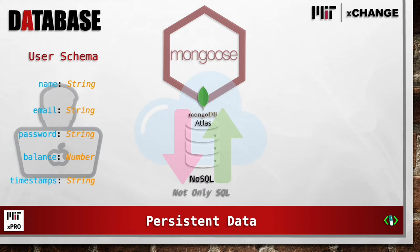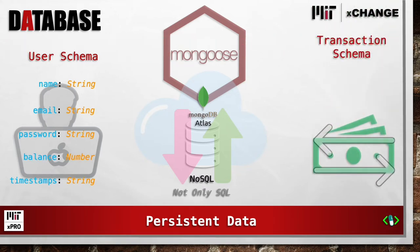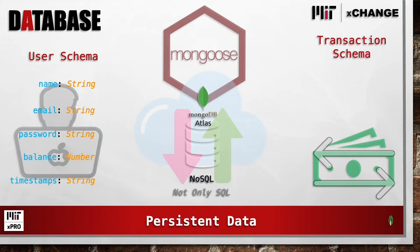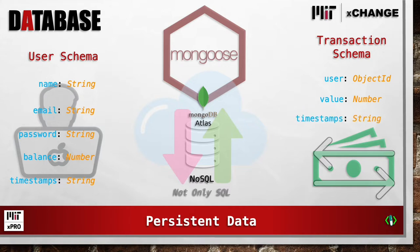which is a number. We also have our transaction schema that consists of the user, which references the Mongoose object ID, a value that is a number, and timestamps, which are strings.